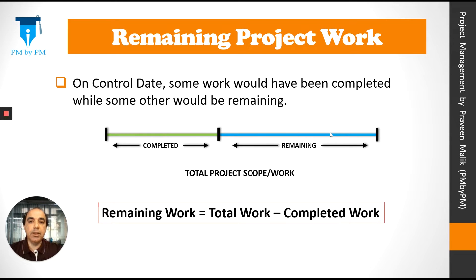On a control date, some work would have been finished while some other work would be remaining. The control date is any date in between the project where you are measuring the performance of the project. If you look at this diagram, green signifies the completed work whereas blue signifies the remaining work. The remaining work is equal to total work minus completed work.